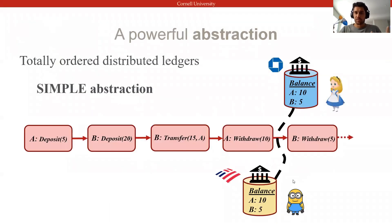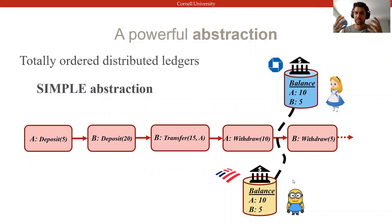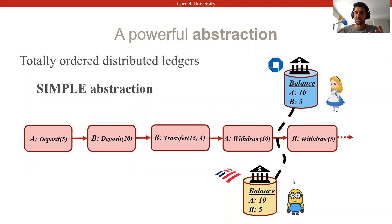I'm sure most of you, whether entirely voluntary or not, have heard of blockchains. Before I get into Basel itself, I want to start building our context by revisiting the simple but beautiful abstraction of totally ordered ledgers that underpin consensus in most BFT and blockchain systems.